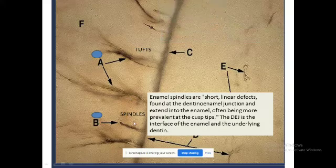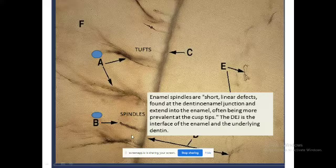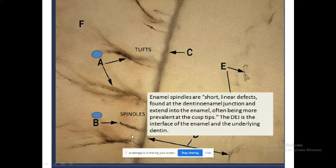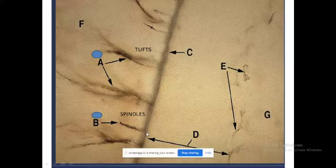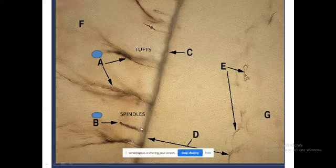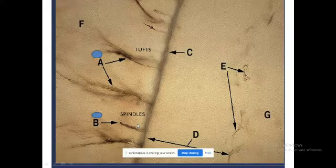Next is enamel spindles, which are short linear defects found at the dentino-enamel junction. The most accepted school of thought to describe spindles is that odontoblastic processes and their endings get embedded in the enamel beyond the dentino-enamel junction at the time of tooth formation.